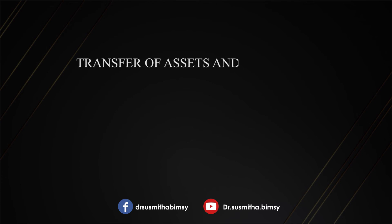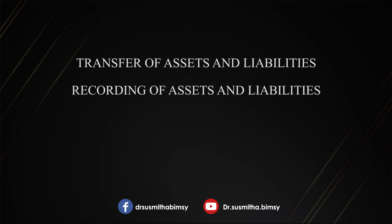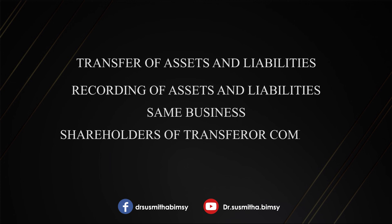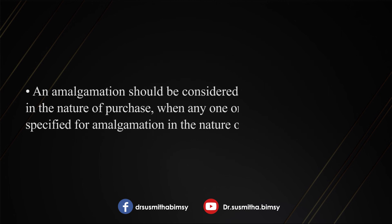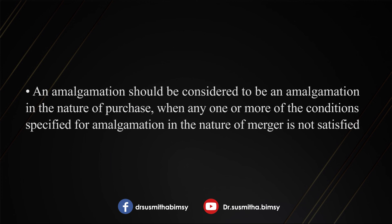To summarize the five conditions: first, all assets and liabilities of the transferor company should be taken over by the transferee company; second, the assets and liabilities taken over are recorded at their book value; third, after amalgamation, the same business of the transferor company is intended to be carried on by the transferee company; fourth, shareholders holding at least 90% of equity share capital should become equity shareholders of the transferee company; and fifth, purchase consideration can only be in the form of shares. If all five conditions are satisfied, it is amalgamation in the nature of merger; if any are violated, it is amalgamation in the nature of purchase.